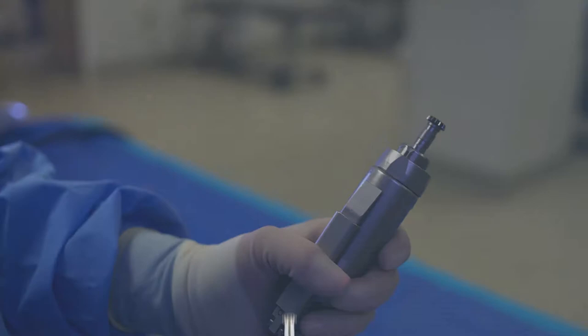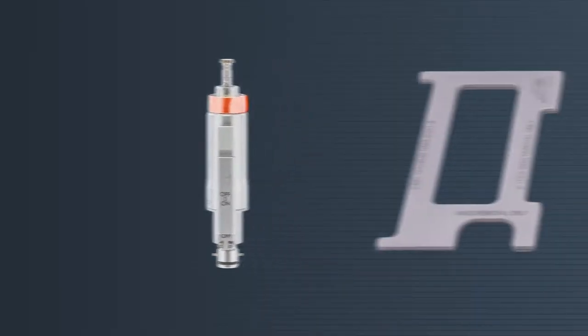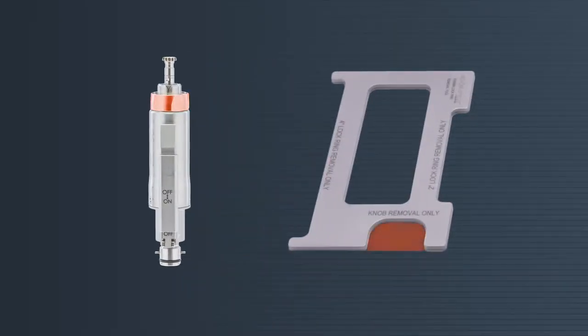If the lock collar is hard to remove, we suggest using the lock ring removal tool. Use the circular cutout and place it on the lock collar to loosen it by turning it counterclockwise. It's good to do this when the device is extremely soiled or has a lot of debris on it.